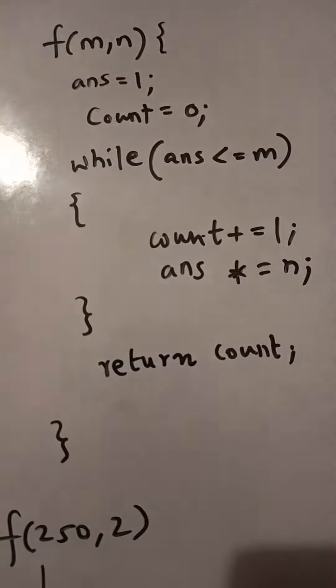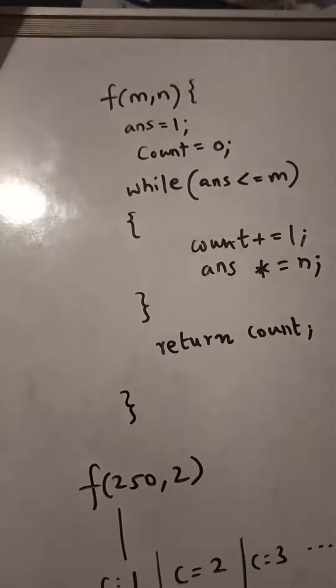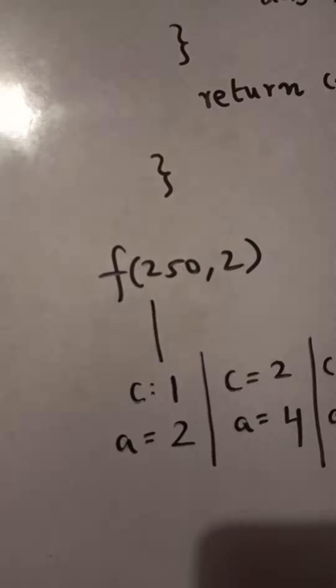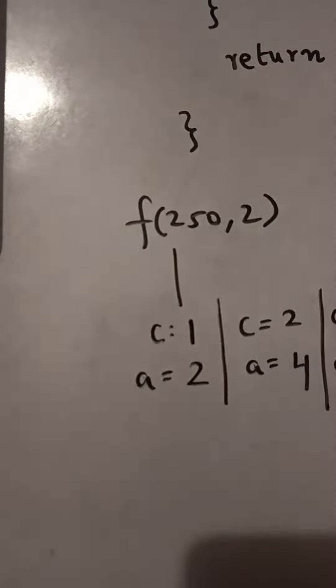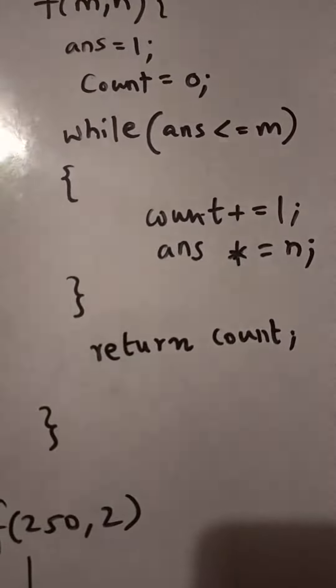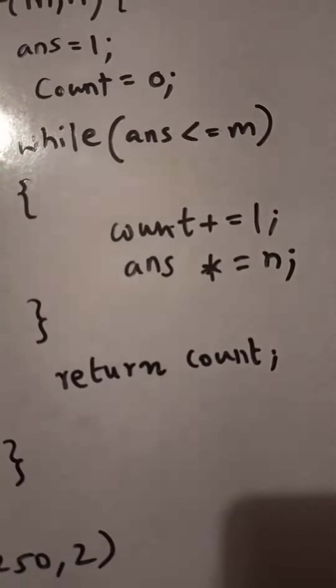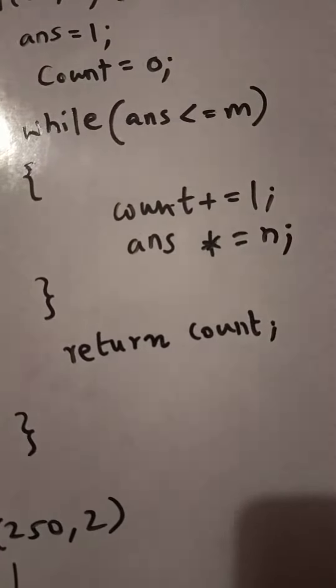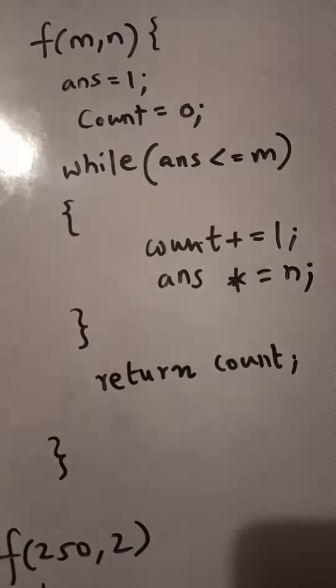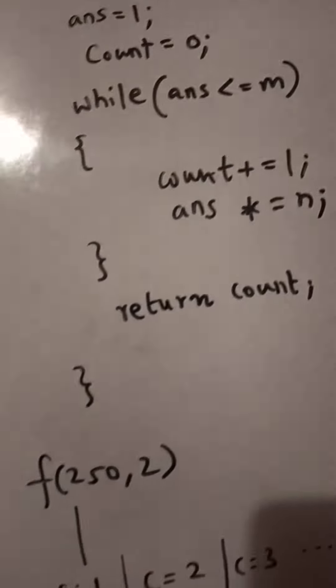I have drawn the diagram for you to understand it easily. Initially count is 1 and answer is 2, because count was 0 and gets incremented by 1, and answer was 1 and is now multiplied by 2 because n is 2.